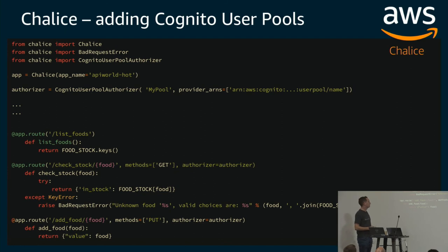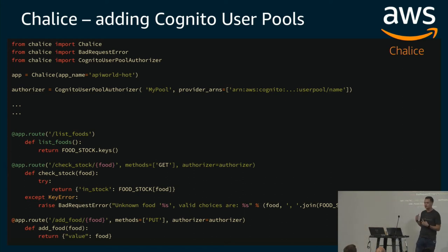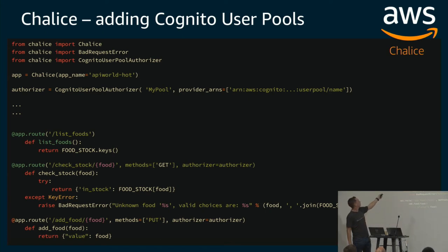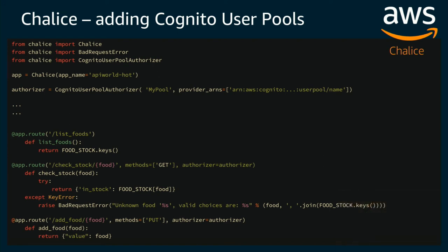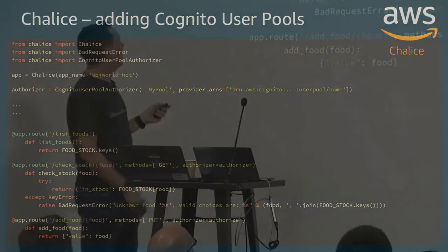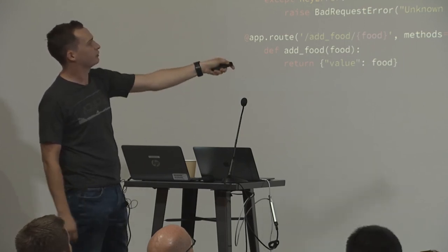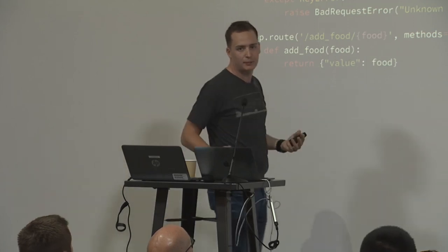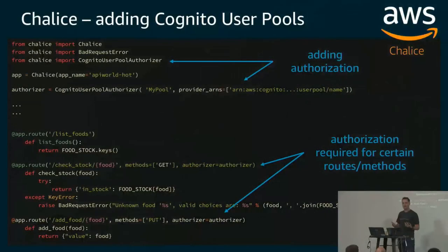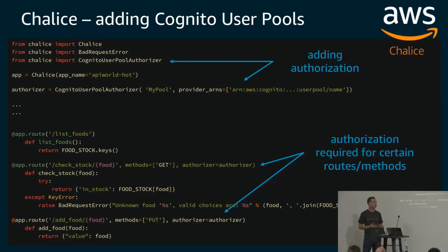Tying back to Chalice: integrating Cognito user pool authentication and authorization into your application is really easy with Chalice. You instantiate a new CognitoUserPoolAuthorizer object with the details of your Cognito user pool, and then you can attach it to specific API methods using 'authorizer=that_authorizer'. You pick and choose which API methods you want fronted with that authorizer, and with just a couple of lines of code you have full authentication and authorization in front of your API.